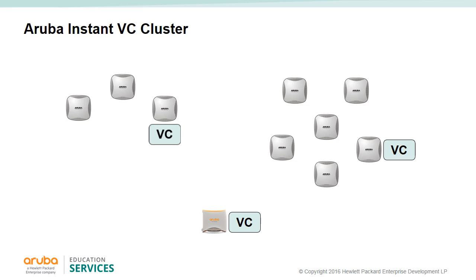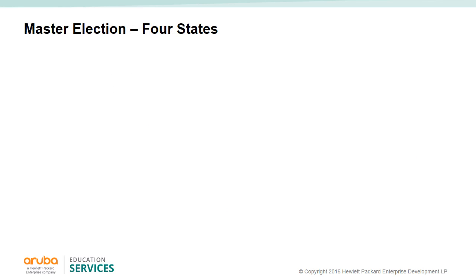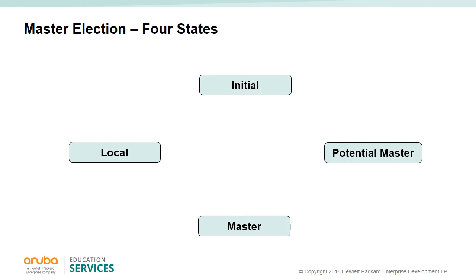The IAP-93 will lock your cluster to a limit of 16 APs and a limit of 256 users. IAPs can be in one of four states: initial, local, potential master, and master.